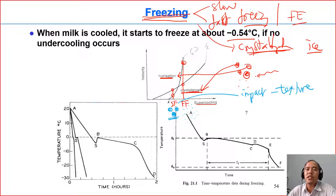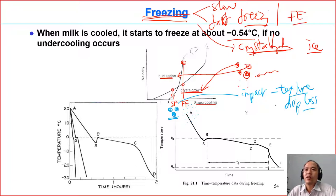With slow freezing, you have large crystals, which means you have more impact on the food structure. You may break more of the food structure, and when you thaw, you get more drip loss — because when the structure is more broken, more liquid is released during thawing. You also get what is called cell dehydration: the cells of the food or microorganisms lose water during freezing.